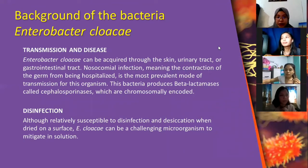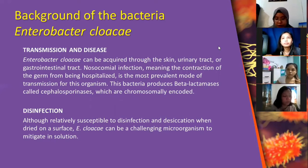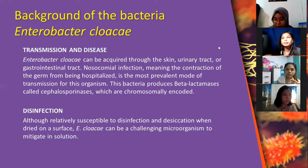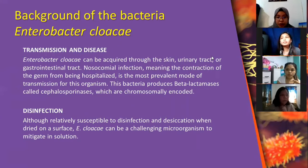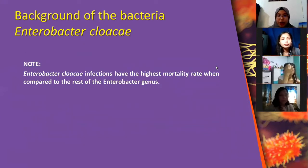For transmission and disease, the most prevalent mode of transmission for this organism is nosocomial infection, meaning contraction of the germ from being hospitalized. This bacteria produces beta-lactamases called cephalosporinases, which are chromosomally encoded. Although relatively susceptible to disinfection and desiccation when dried on a surface, Enterobacter cloacae can be a challenging microorganism to mitigate in solution. Enterobacter cloacae infections have the highest mortality rate when compared to the rest of the Enterobacter genus.